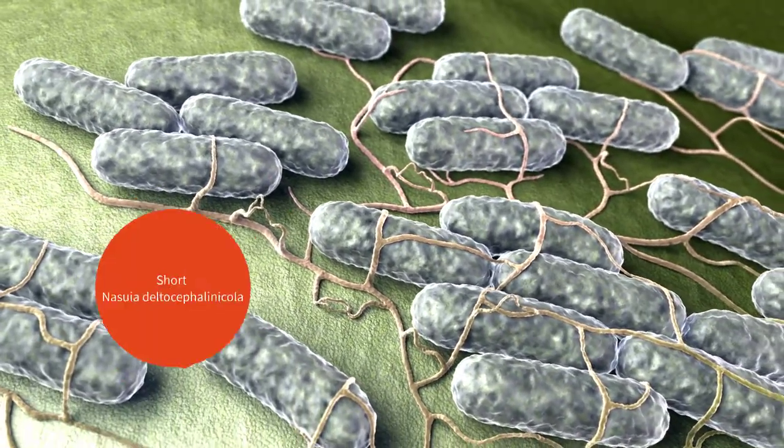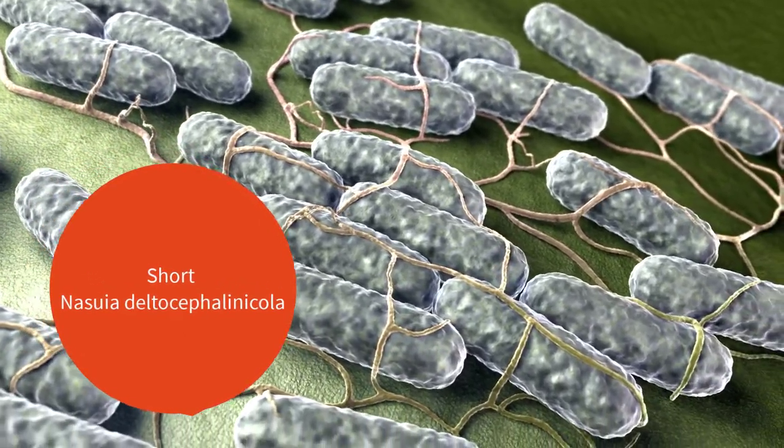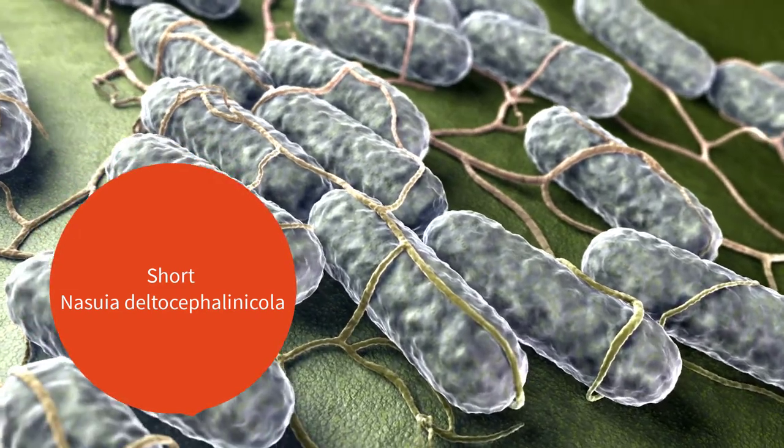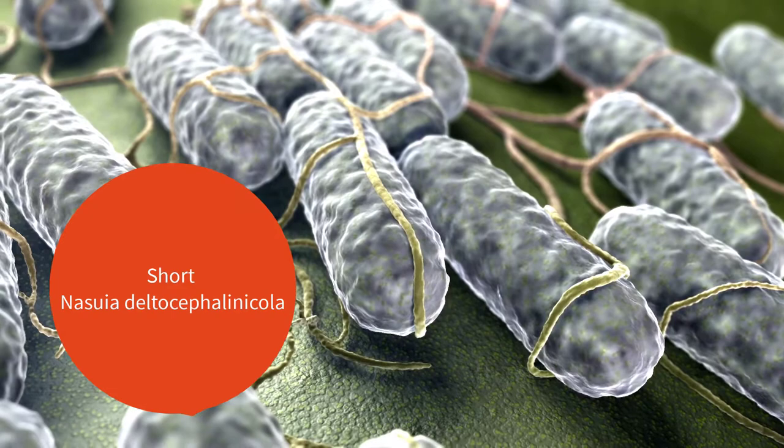Some are short, like the genome of the insect-dwelling bacteria Nasuia deltocephalinicola with just 137 genes across 112,000 nucleotides.